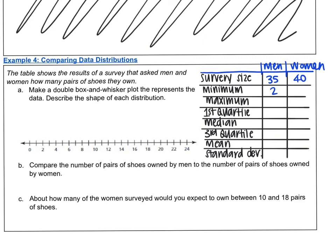I'll put one column for men and one column for women. The survey size was 35 men, 40 women. The minimum number pairs of shoes men had was two, for women was five. The maximum for men was 17, for women was 24. First quartile, five and 12. Median, seven and 14. Third quartile, 10 and 17. Mean, eight and 14. Standard deviation, three and four.